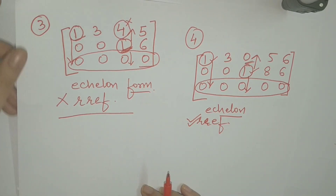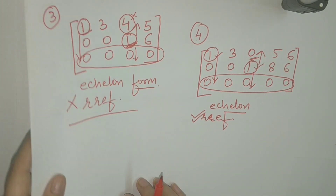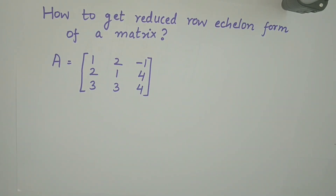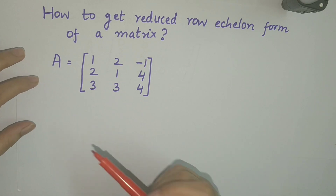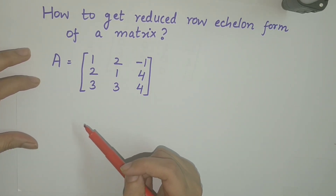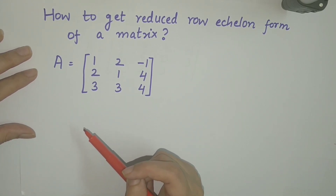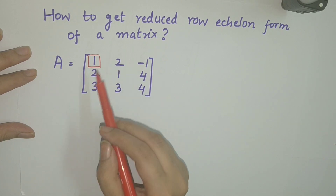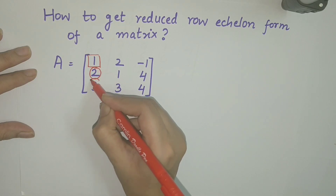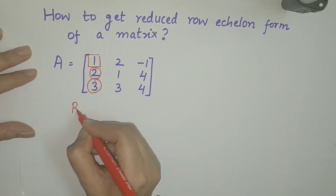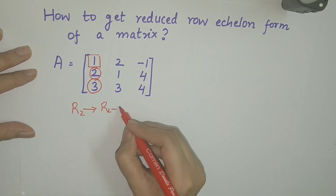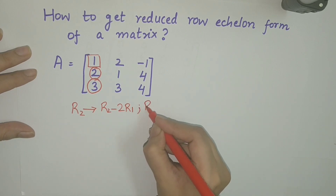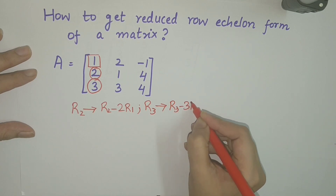I hope by now we have understood what echelon form is and what reduced row echelon form is. So how do we get the reduced row echelon form from a given matrix? Let us observe this matrix. In the process, let us depict our leading entries by entrapping them in squares and entries below the leading entries by encircling them. Start by considering the first row — here a₁₁ is already 1, so we make entries below it as 0, by employing the row operations R2 → R2 minus 2R1 and R3 → R3 minus 3R1.